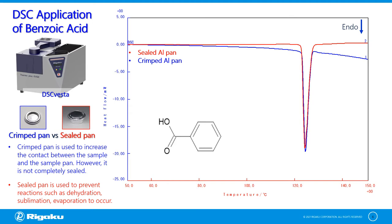Here is a DSC application of benzoic acid using a crimped aluminum pan shown in the blue curve and a sealed aluminum pan shown in the red curve. Benzoic acid is used in food and pharmaceuticals as an active ingredient for antimicrobial and antifungal preservative. It is a subliming material, which means the material changes from solid to gas phase. The crimped aluminum pan reveals a baseline shift towards the endothermic direction from 100°C due to sublimation, followed by another endothermic peak at 120°C due to melting. After the melting reaction, the DSC signal did not return to the baseline and continues towards the endothermic direction due to evaporation.